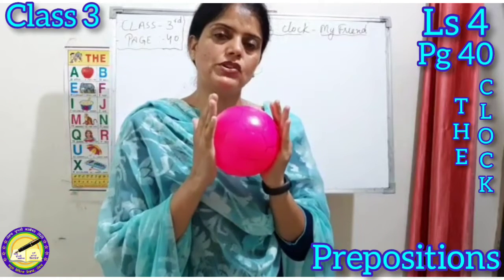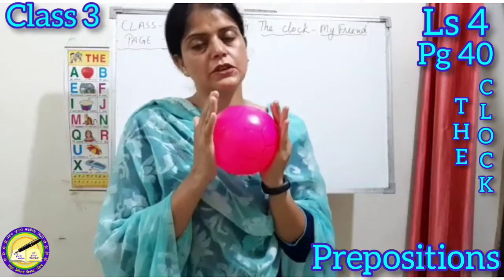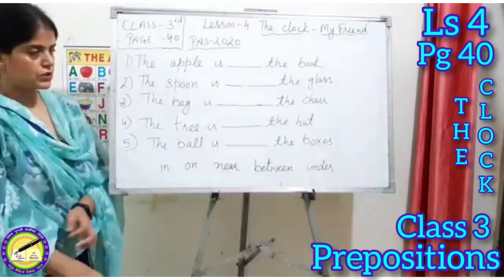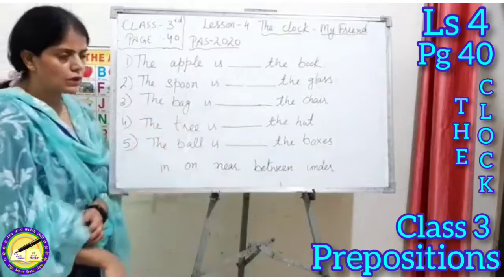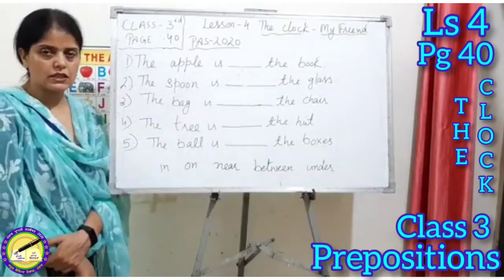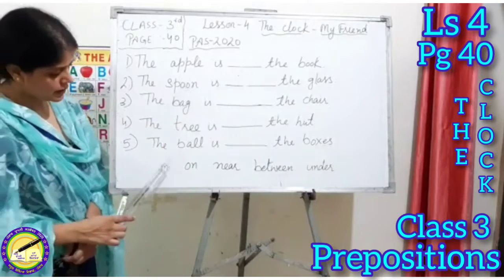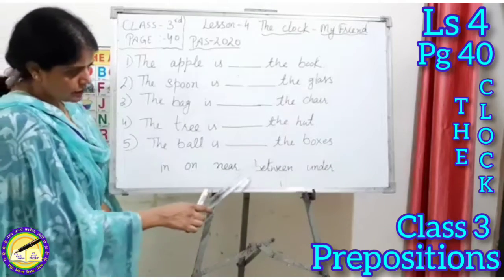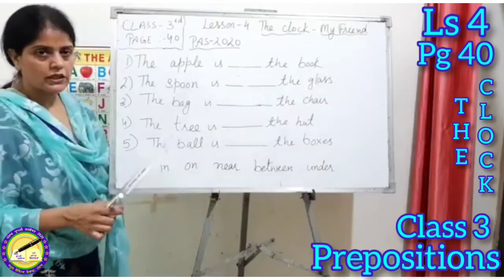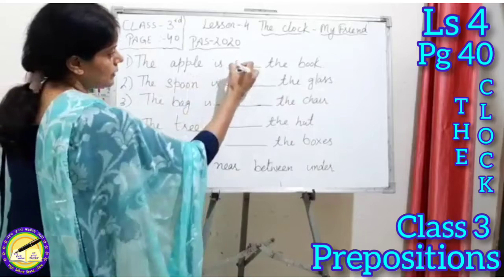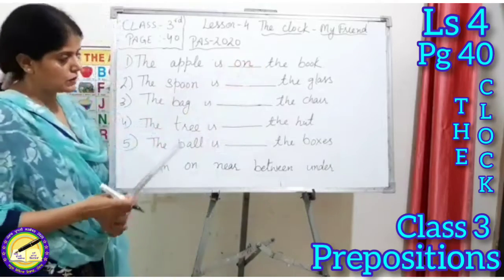Now we should do the fill-ups given on page number 40. The apple is blank the book. We saw that the apple was placed on top of the book. The options are: in, on, near, between, under. We know that 'on top' means 'on', so we write: the apple is on the book.